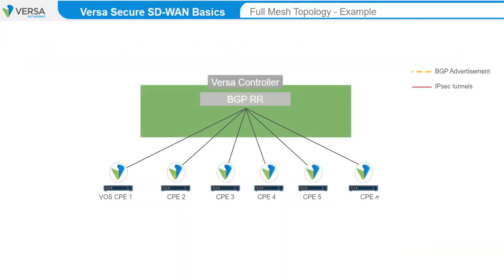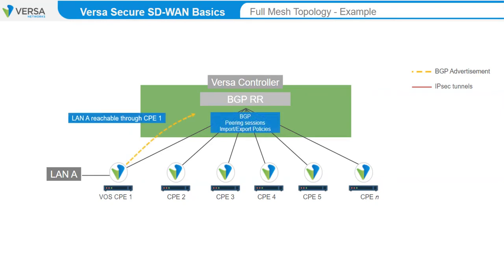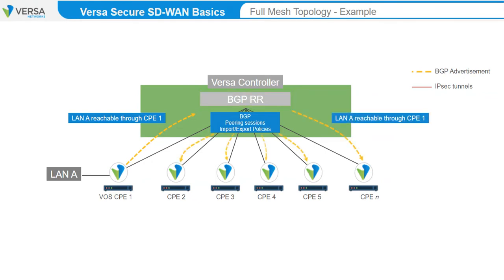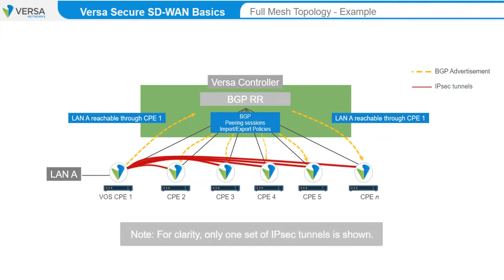In the Full Mesh example, CPE-1 is connected to LAN-A. Through BGP routing policy, which is automatically created by Versa Director, CPE-1 advertises reachability to LAN-A to the Versa Controller. As a route reflector, the Versa Controller advertises that reachability information to all other CPEs in the routing domain. Because the devices are configured as Full Mesh devices, all other CPE devices are pre-configured with a BGP policy that identifies and accepts the routes from all CPEs. Once the route is accepted into the local routing table of a remote CPE, a dynamic secure tunnel is created to the advertising device.